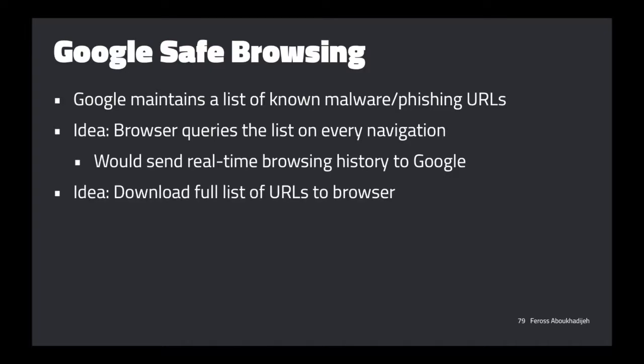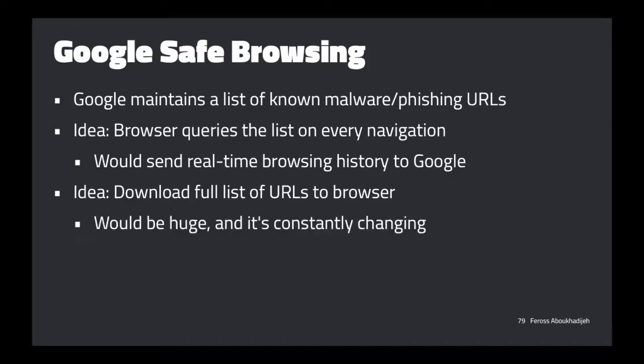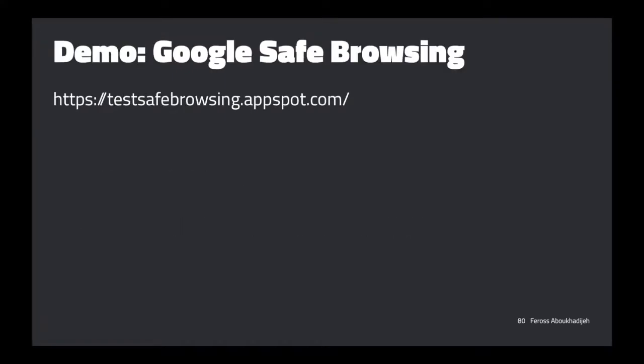Another idea is to download a giant list of all these suspicious URLs. Our browser can check this list before loading a URL, and that will be a little bit faster because we'll have the list locally. But the downside is this list is constantly changing and it's also going to be ginormous.